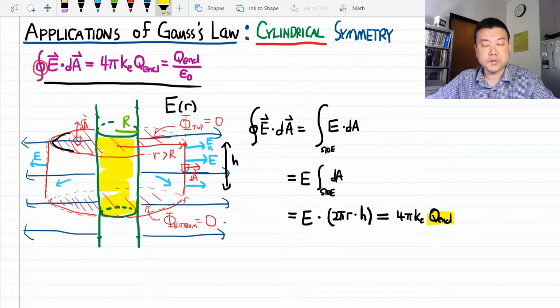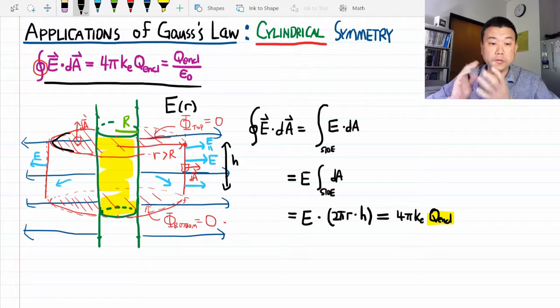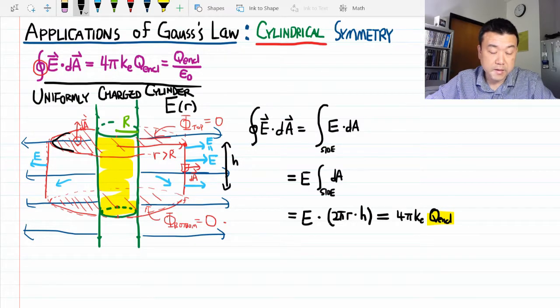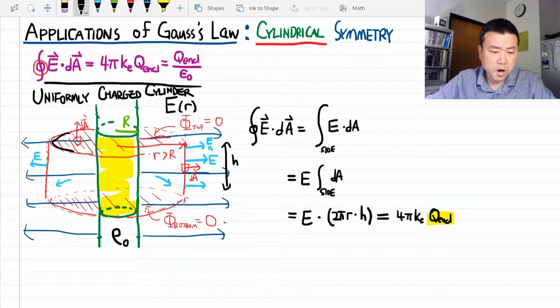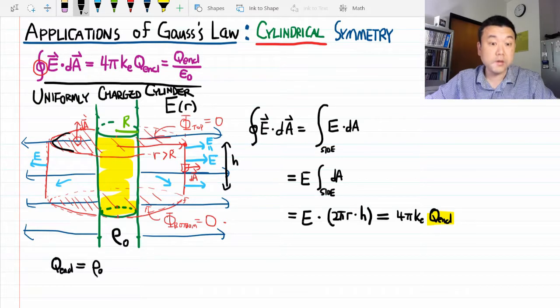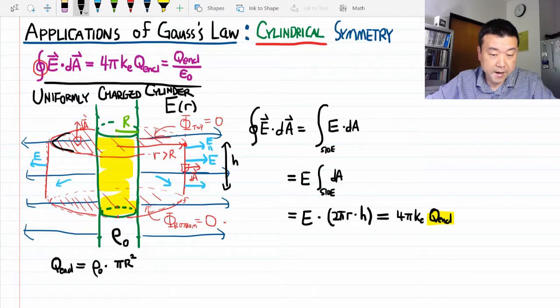Here we need some kind of density. We could do the same thing we did with the uniformly charged sphere. For the uniformly charged cylinder, it has uniform charge density ρ₀. I can express the charge enclosed in terms of this density and the volume, which is the cross-sectional area πR² times